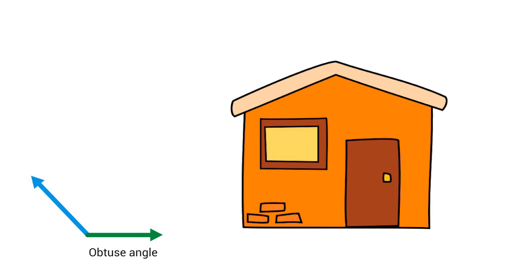Next we will see obtuse angle. The angle which is more than 90 degrees is known as obtuse angle. We can see this in the example of the roof of a house.